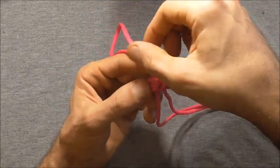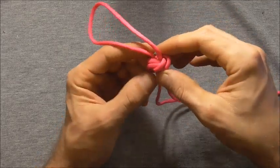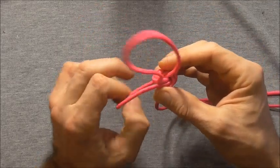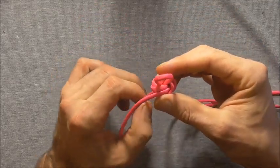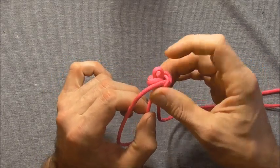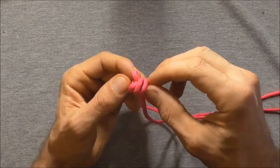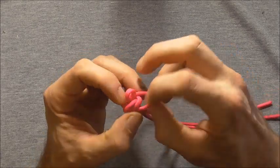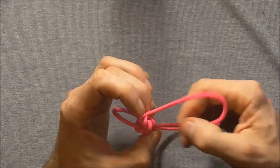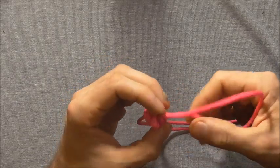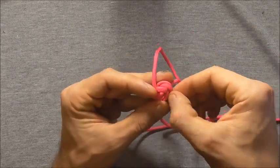And once we get to this loop we can pull this almost all the way down, but on our first tightening just leave a tiny loop here because we don't want to lose that in the centre of the knot. So we'll leave a tiny loop there and we'll continue pulling slack through.